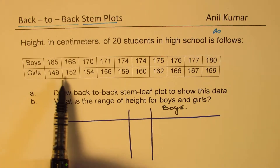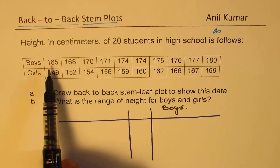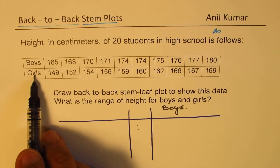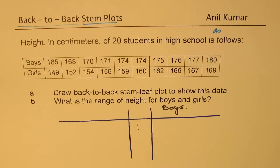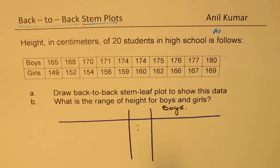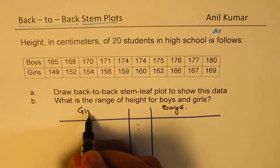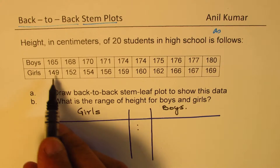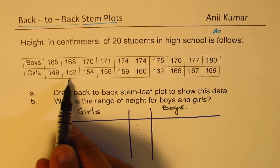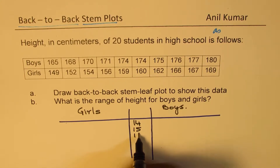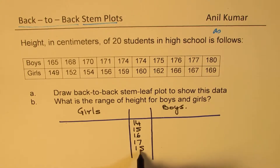In the girls' data, we also see 14 and 15 in addition to 16s. So I'm going to leave some space here so we can add girls' data in the same plot. We are looking for a back-to-back STEM leaf plot — boys' data on the right side, girls' data on the left side. So in the center I'll place 14, 15, 16, 17, 18.